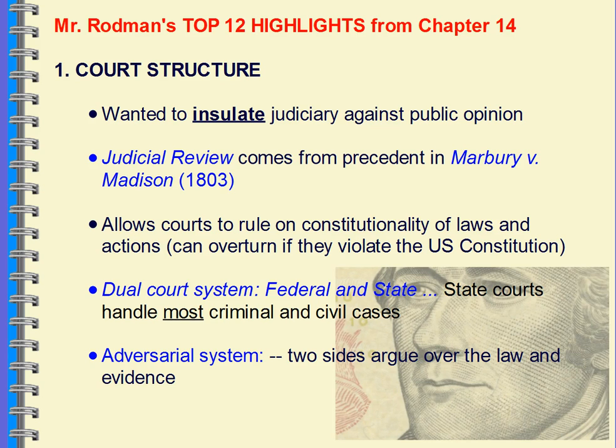We want to differentiate between the dual court system and the adversarial system. The dual court system means you've got a federal appeals process and state courts that have their own appeals process all the way up to the state Supreme Court. State courts handle most criminal and civil cases. Federal courts tend to handle appellate jurisdiction, except where the Supreme Court has original jurisdiction under constitutional provisions. The adversarial system has two sides arguing a case using evidence to determine which side is correct.